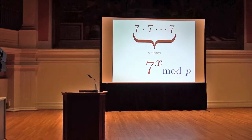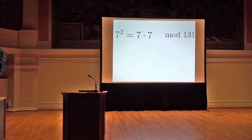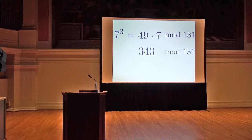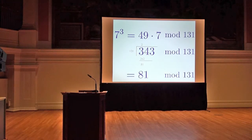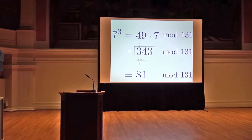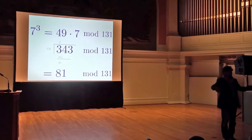So let's take 7 to the x and instead of computing just 7 to the x, let's compute 7 to the x mod p, which means never let the product get bigger than p. If it gets bigger than p, you wrap around and subtract off p until the number is small again. For example, 7 times 7 mod 131 is still 49 because 49 is less than 131. For 7 to the third: 49 times 7 is 343, which is bigger than 131, so we divide by 131 and keep the remainder, which is 81. So 7 cubed is 81 mod 131. This is an easier problem because our answers never get bigger than p.